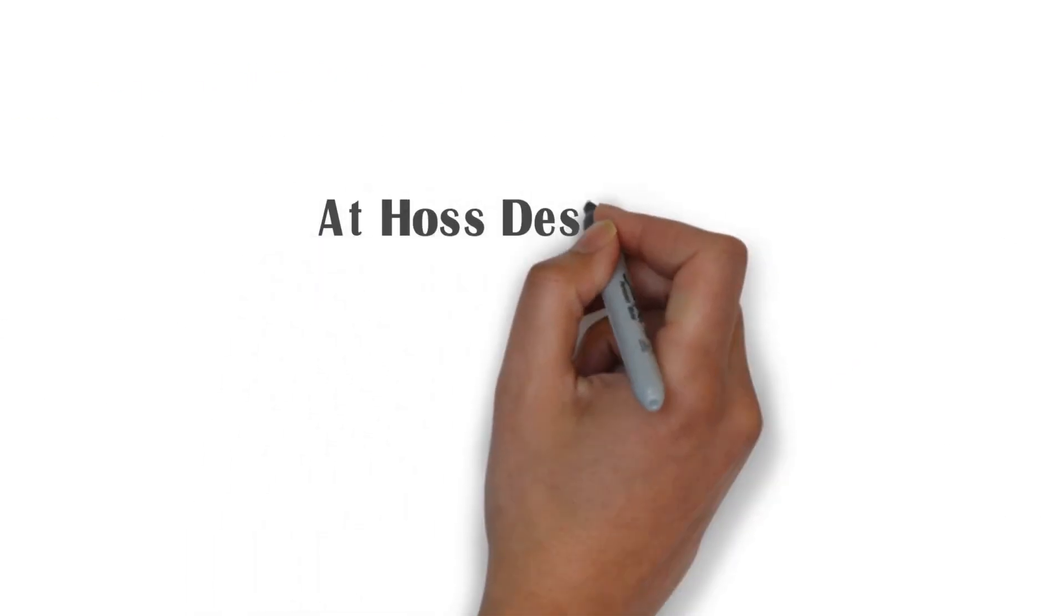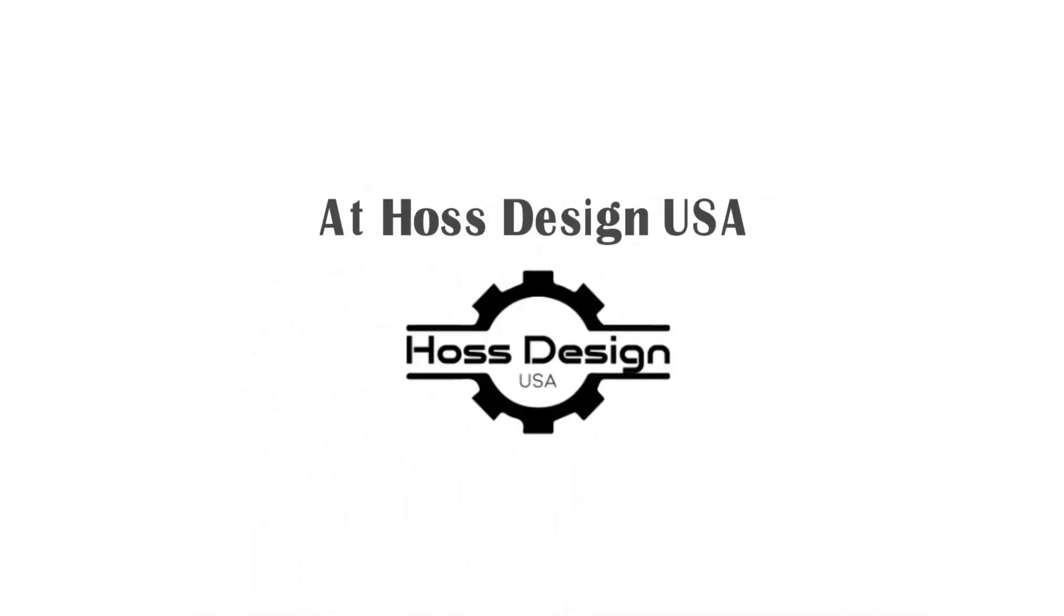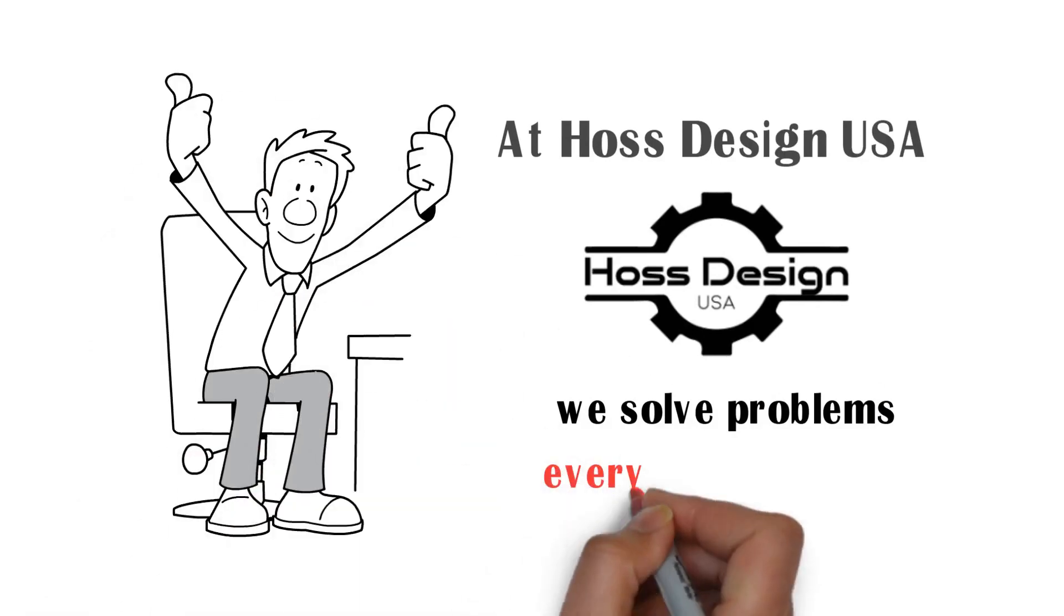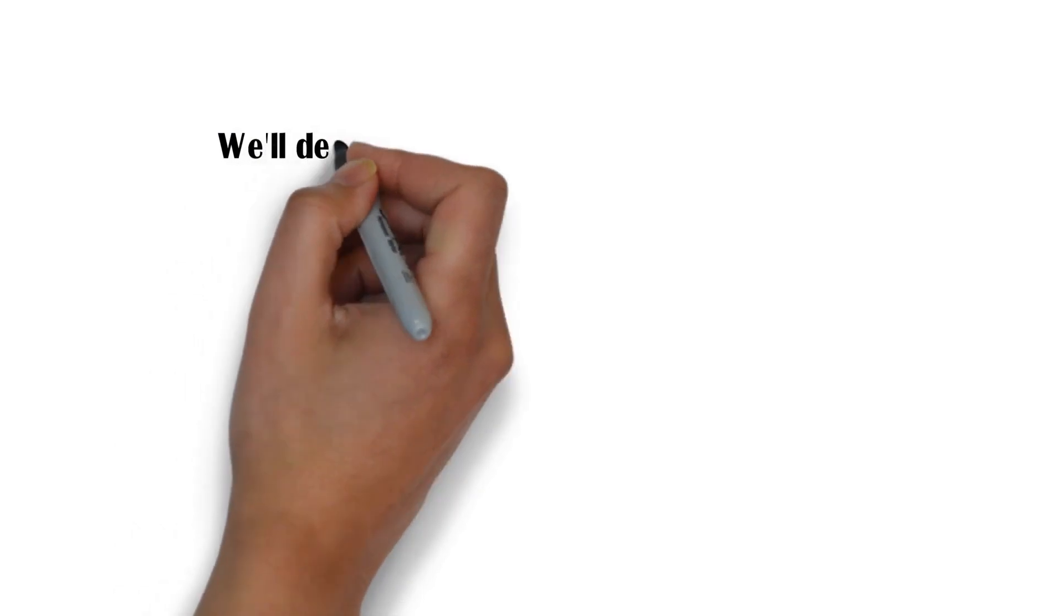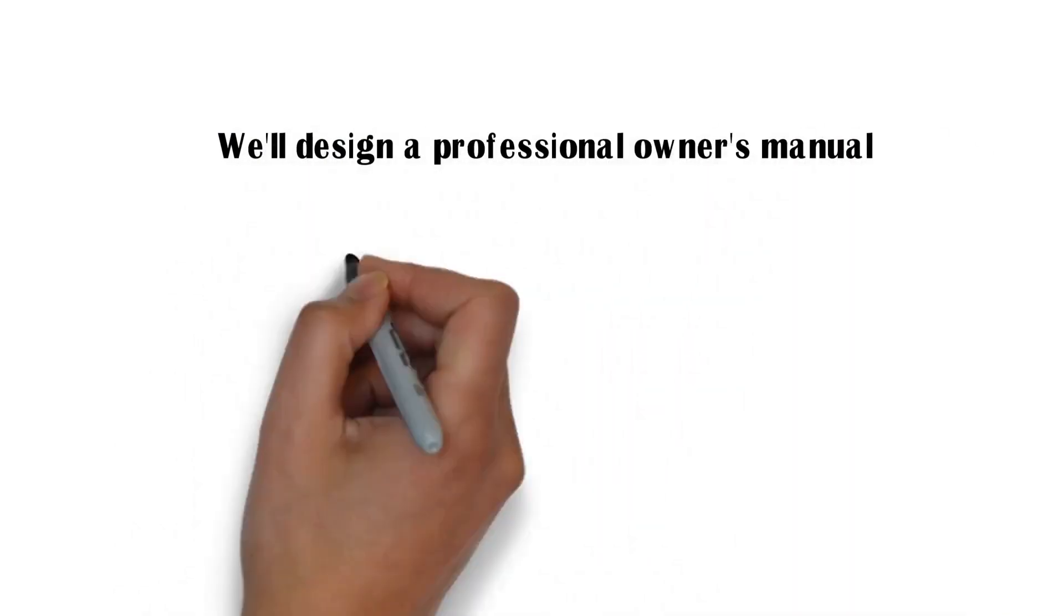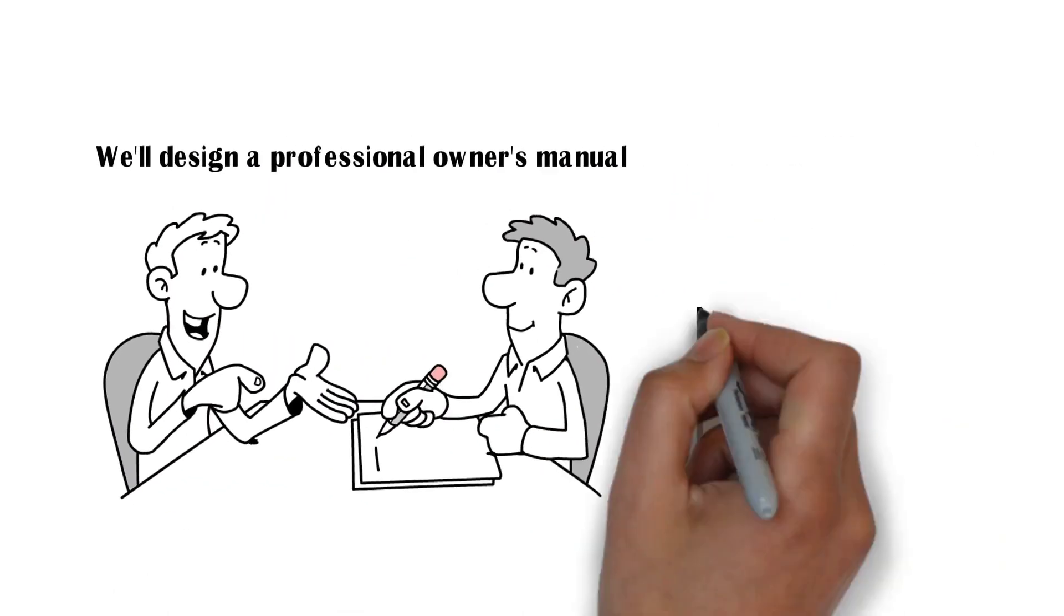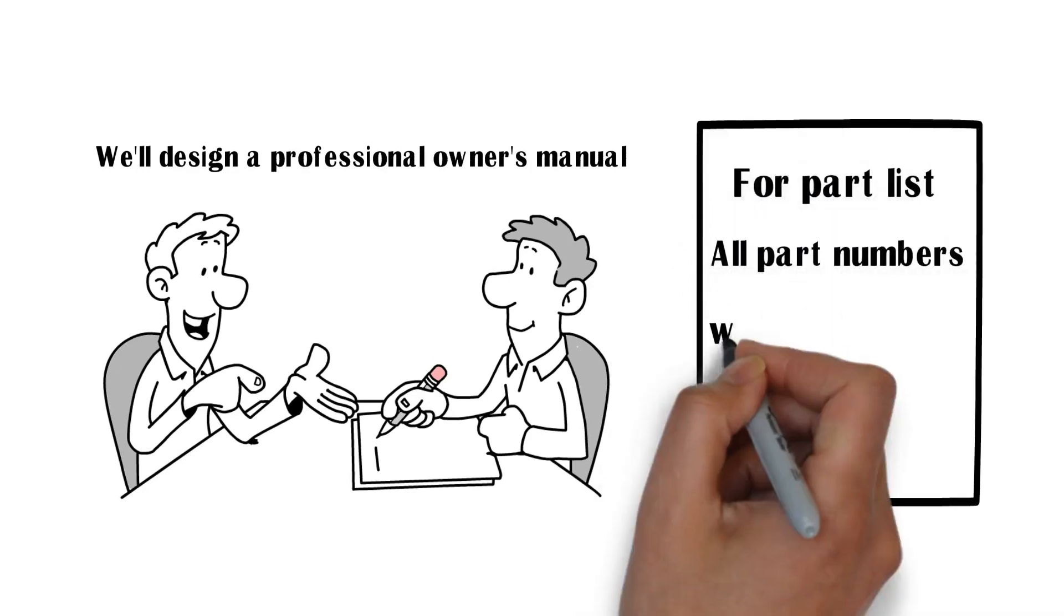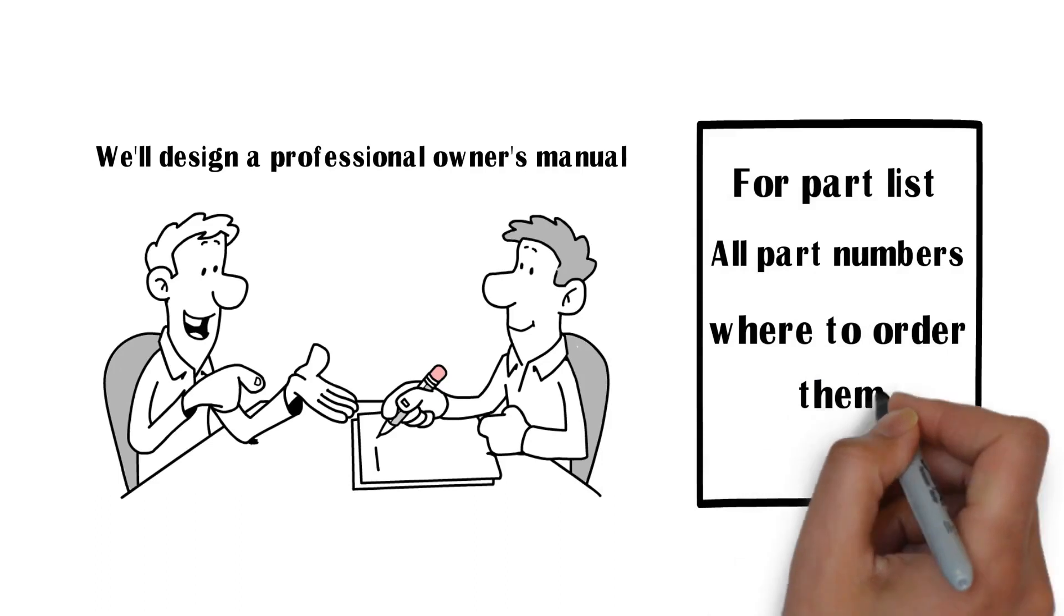At Haas Design USA, we solve problems by exploring every single solution. We'll design a professional owner's manual which contains a section for part list including all part numbers and from where to order them.